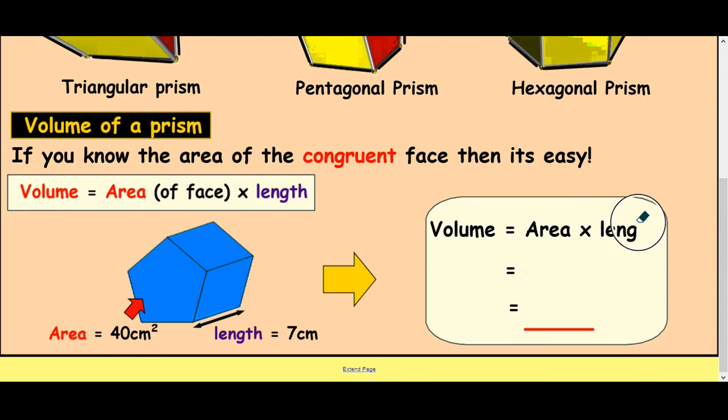So let's just do that calculation, volume equals area times length, 40 times 7, 4 7's are 28, so it would be 280 cm cubed.